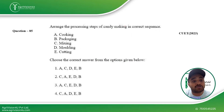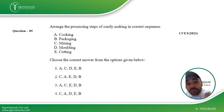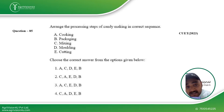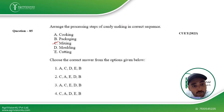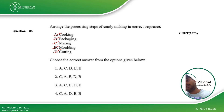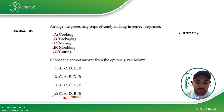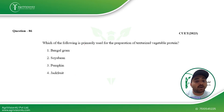Next question: arrange the processing steps of candy making in the correct sequence. Candy making is different from standard food processing — you cannot generalize any type of cooking with candy making. The correct sequence is: first mixing, then cooking, then molding, then cutting, then packaging. That means option four — C, A, D, E, B — is the correct sequence.